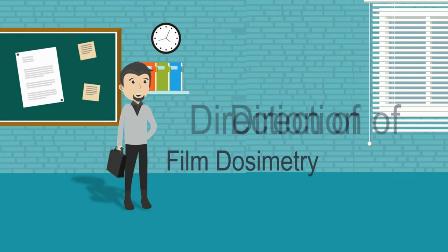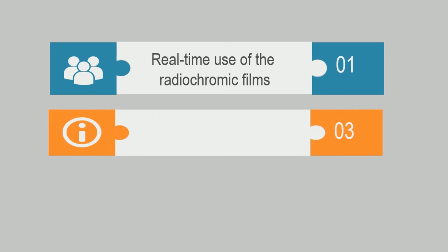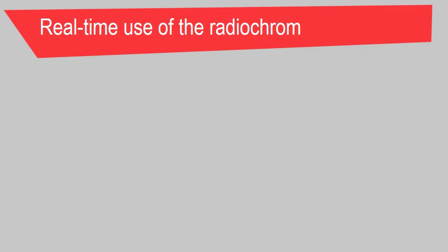For my part, I will be presenting about the future directions of film dosimetry. There are three areas to highlight. The first is the real-time use of radiochromic films. Second is the radiochromic film used as a 3D dosimeter. And finally, the use of film dosimetry as a personal dosimeter.